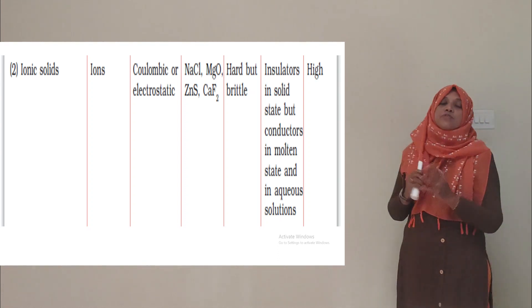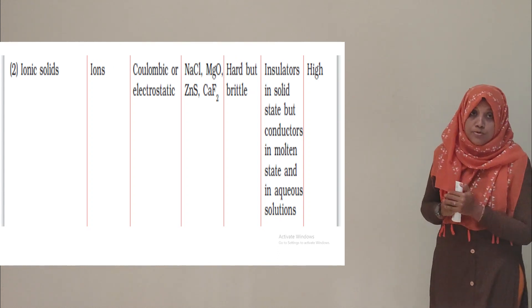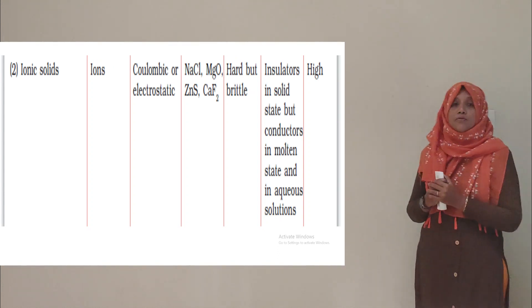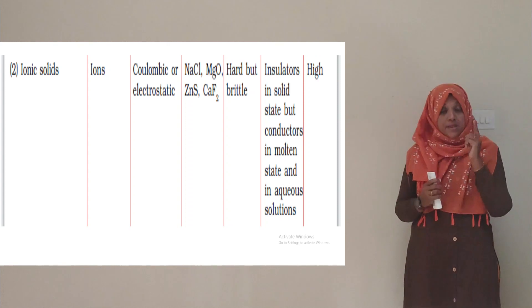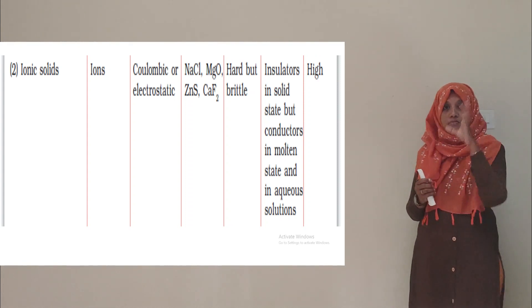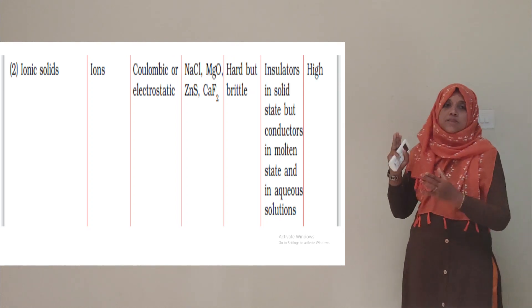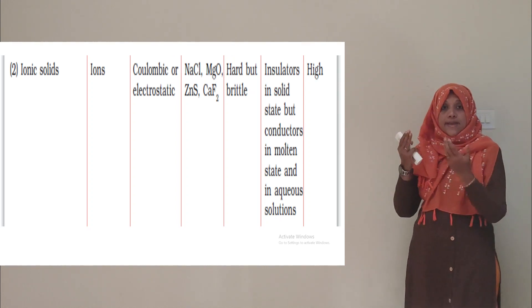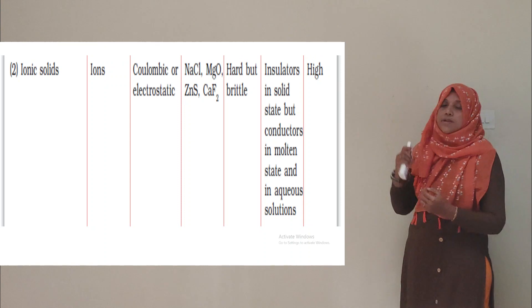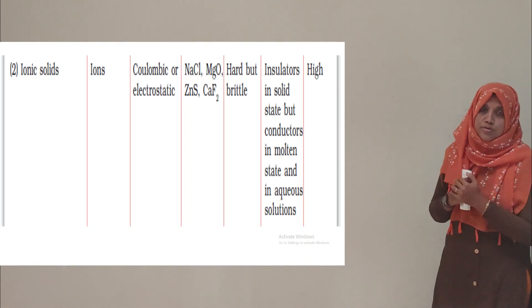In solid state, no ions are free to move. But in molten state or when dissolved in water, ions are free to move. NaCl is an example of ionic solid.